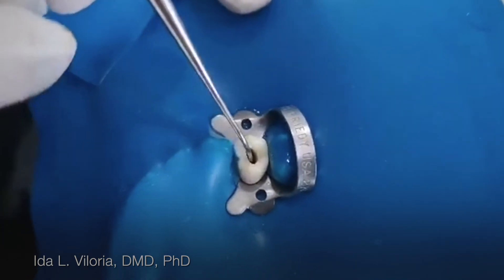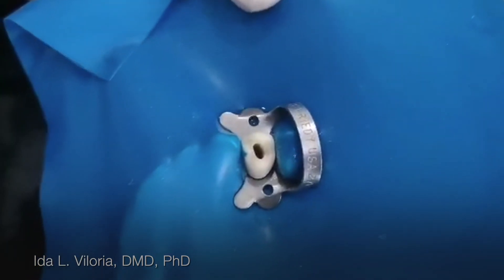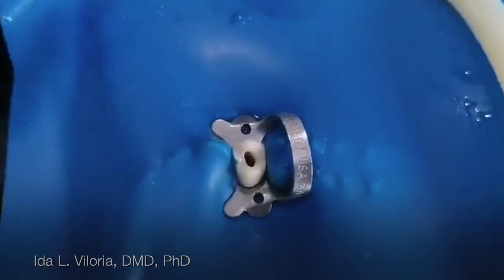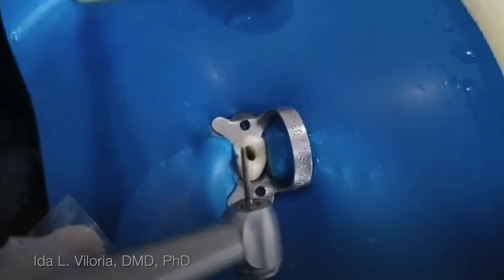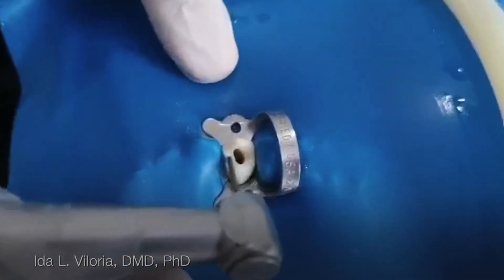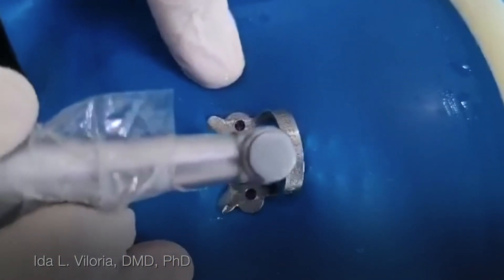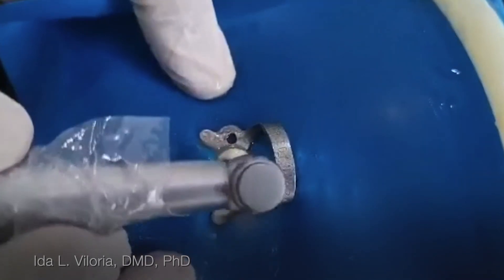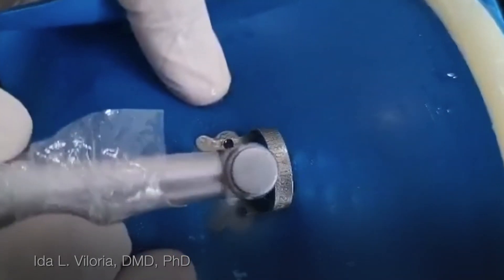Now I'm ready to do the finishing of the walls using the long-tapering fissure burr. So this is it. I'm going to finish it. Smoothing the walls. Then also at the same time, you diverge the walls towards the occlusal.